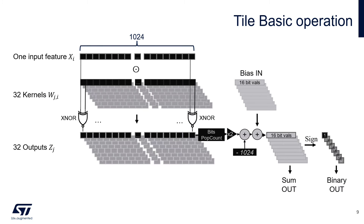Let's go into some detail. Binary multiplication is very easy to support in hardware. Imagine I have one key feature with 32 kernels — I can process all of them in parallel, then implement the popcount, add the 16-bit bias, and quantize back to 1 bit. Essentially, internal accumulators are 16 bits, but the in-and-out operations are binary.